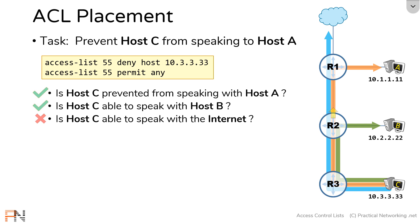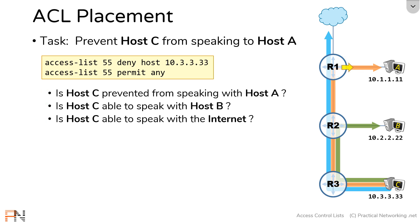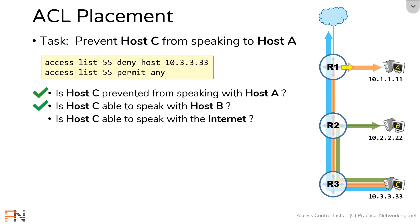Let's try the next router interface in the path. If we apply the access list to router 1's interface, direction in, it's going to have the same effect as the previous location. Traffic from host C to host A is successfully being prevented. Traffic from host C to host B is successfully not being prevented. But traffic from host C to the Internet is still inadvertently being prevented. Which finally brings us to the last interface in the path. If we apply this access list to this interface, direction out, the only traffic whose path goes through that access list is the traffic from host C to host A.